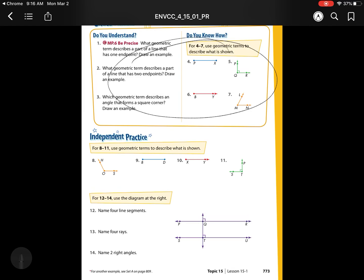Our first one, use geometric terms to describe what is shown. Remember, we're looking at rays, angles, lines, and line segments. A line segment has a start and a stop. A ray has a start but doesn't have a stop, so we use that little arrow. An angle is two rays put together, so we'll see two of those little arrows.